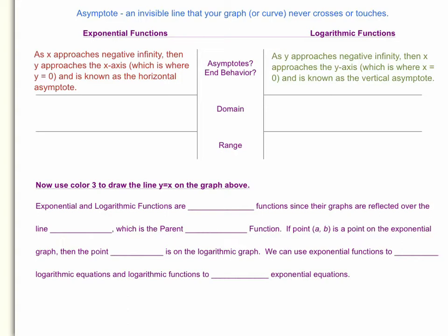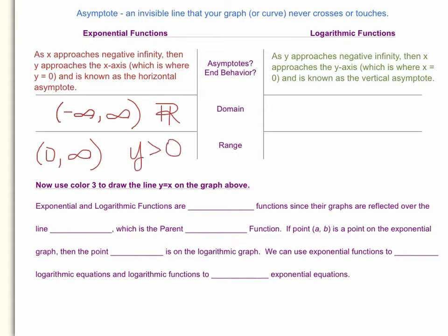Now let's look at the domain and range, first for the exponential function and then for the logarithmic function. If you look at the graph of the exponential function, you will see that the domain goes from negative infinity to positive infinity, or you can use the symbol for all real numbers. The range for the exponential function would be from zero to infinity, but not including zero. In inequality notation, you could write this as y is greater than zero. The reason why the range cannot include zero is because y equals zero is the horizontal asymptote, and by definition the asymptote is an invisible line that your graph or curve cannot cross or touch.